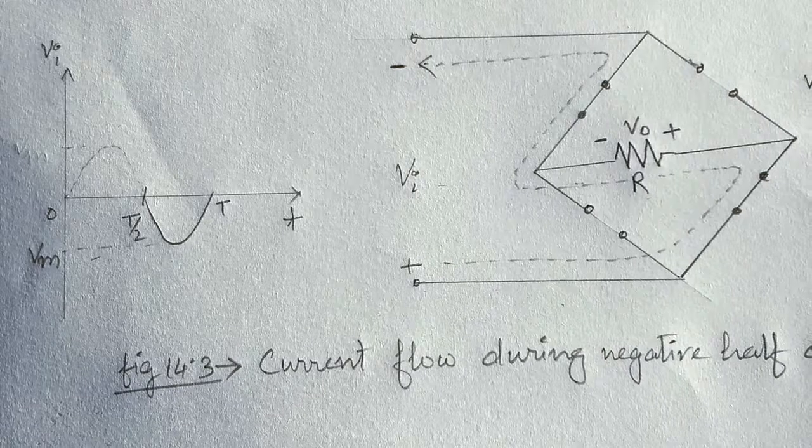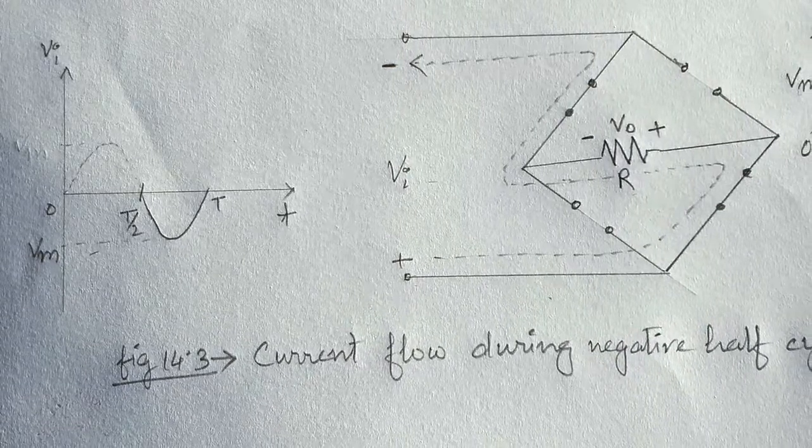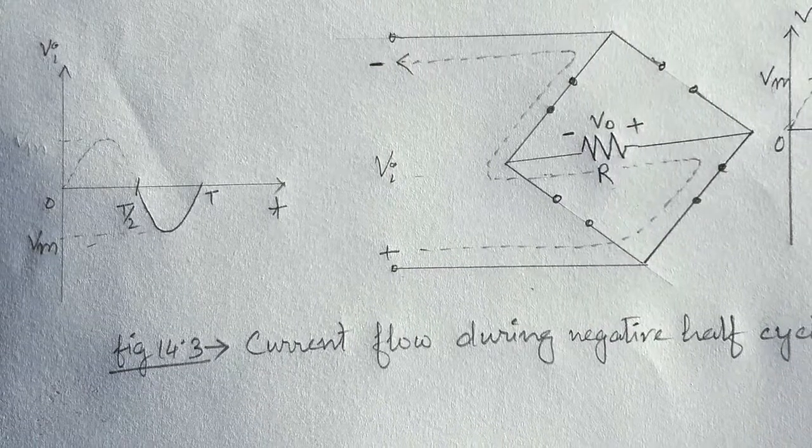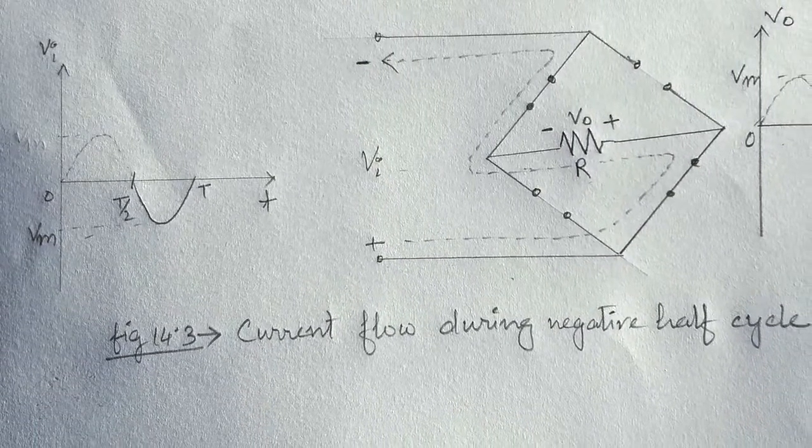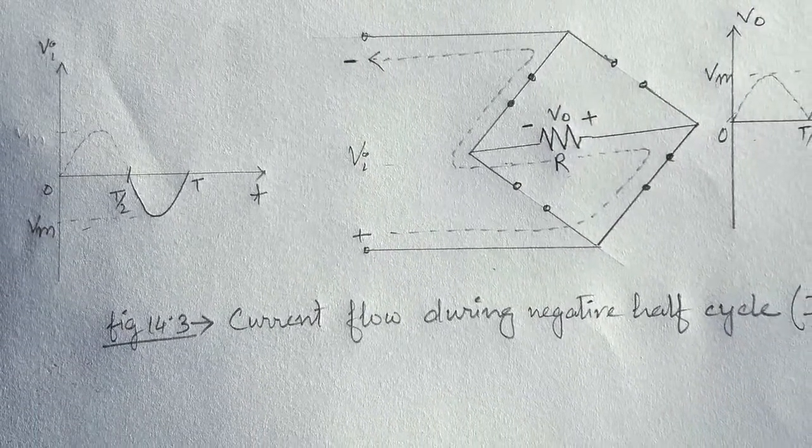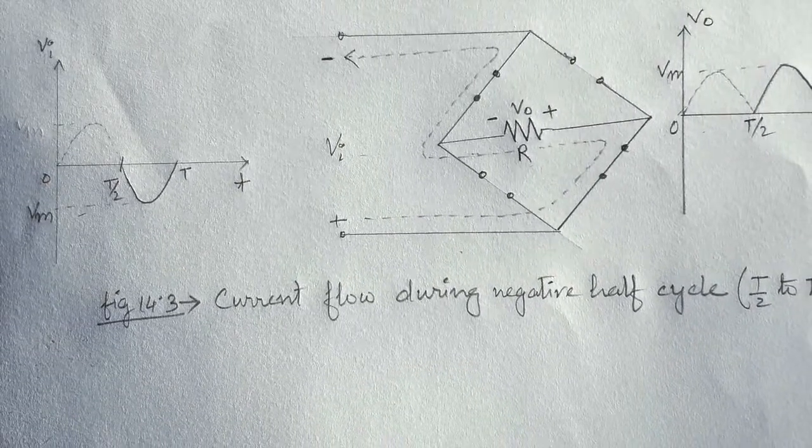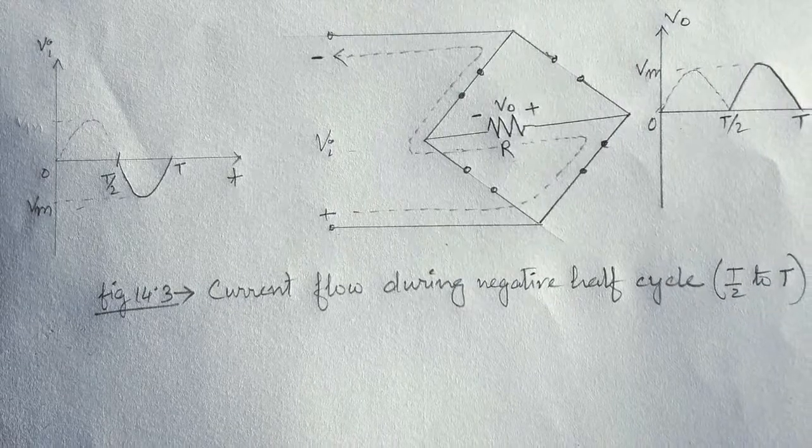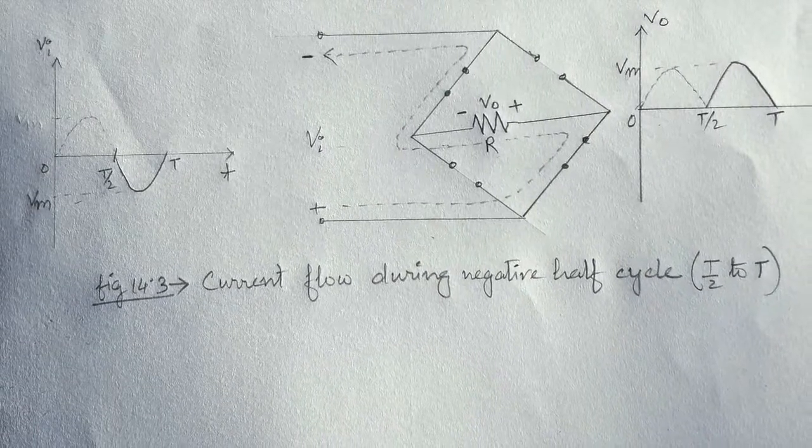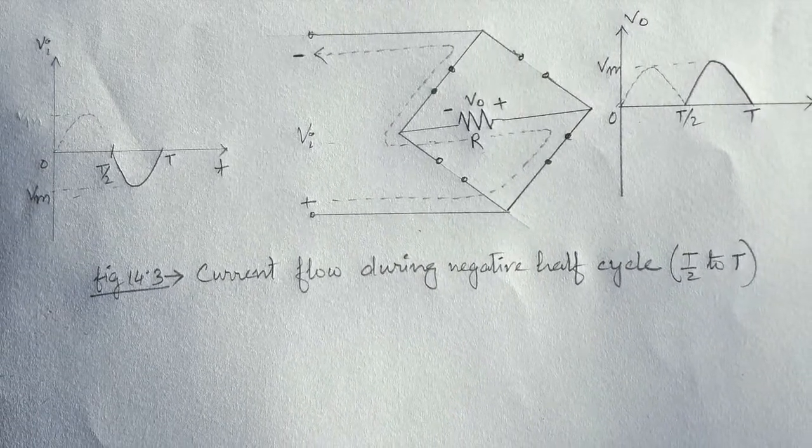Now, for the negative half cycle, diodes D1 and D4 are conducting current. Diodes D2 and D3 are reverse biased and act as open circuit. So in this way, the output appears for the full cycle of the input signal. The input and output waveforms are as shown in this figure.